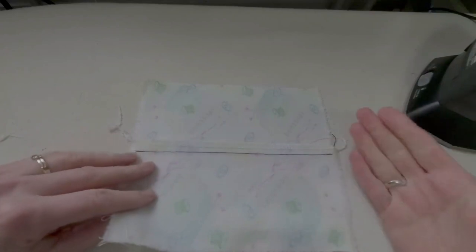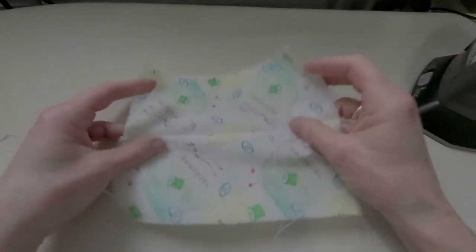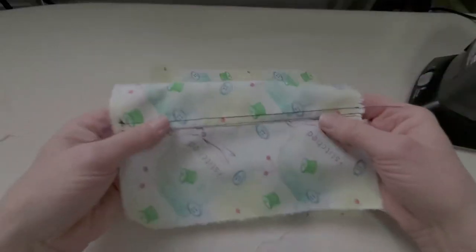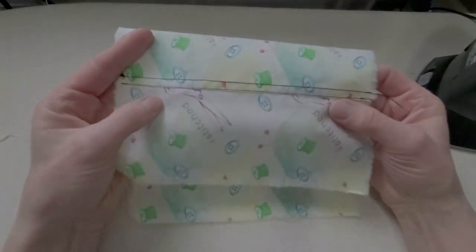So far this is just a normal sewn and serged seam, but now we'll do two rows of top stitching so that it ends up looking exactly like our flat felled example.